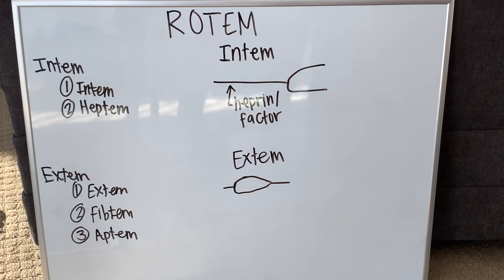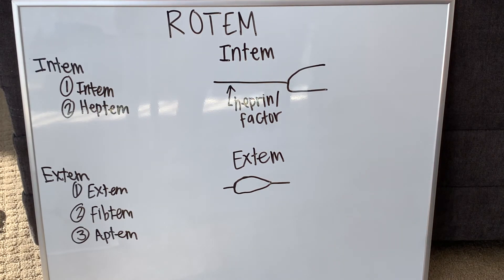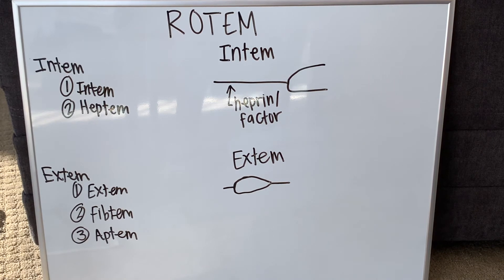The last parameter on ROTEM is lysis, the ML. If you get an Extem back that shows excessive lysis, you probably need to give TXA or aminocaproic acid. You can double-check with your Aptem — make sure the Aptem is normal — and if so, give one of those antifibrinolytics, because it means you're having too much clot lysis.